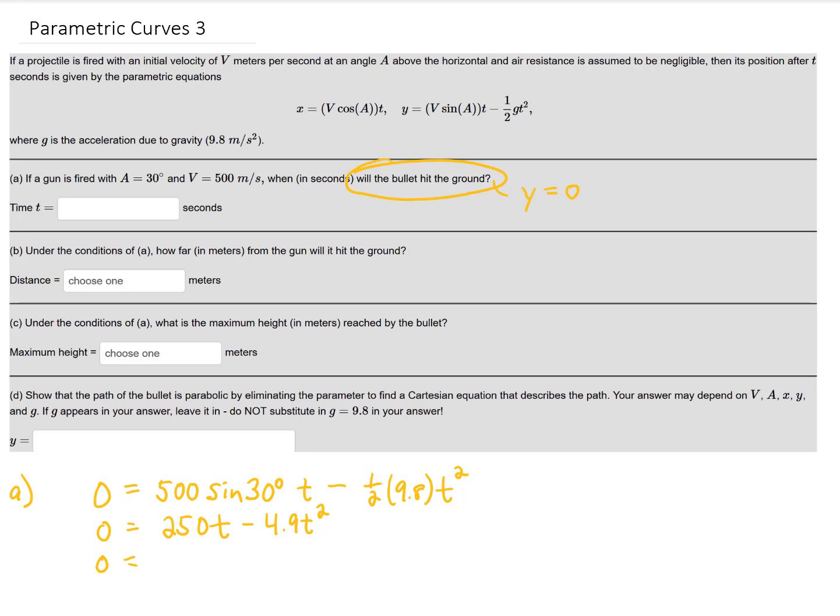To solve this equation it's probably easiest to factor. We can take a t out and now we have two factors multiplied together that are set equal to 0. That means that we can split this problem into its two factors. This first factor here is going to give us t equals 0 as a solution. We knew that. We knew that the bullet started on the ground so that's not the result that we're looking for. This factor here gives us 250 minus 4.9t equals 0.